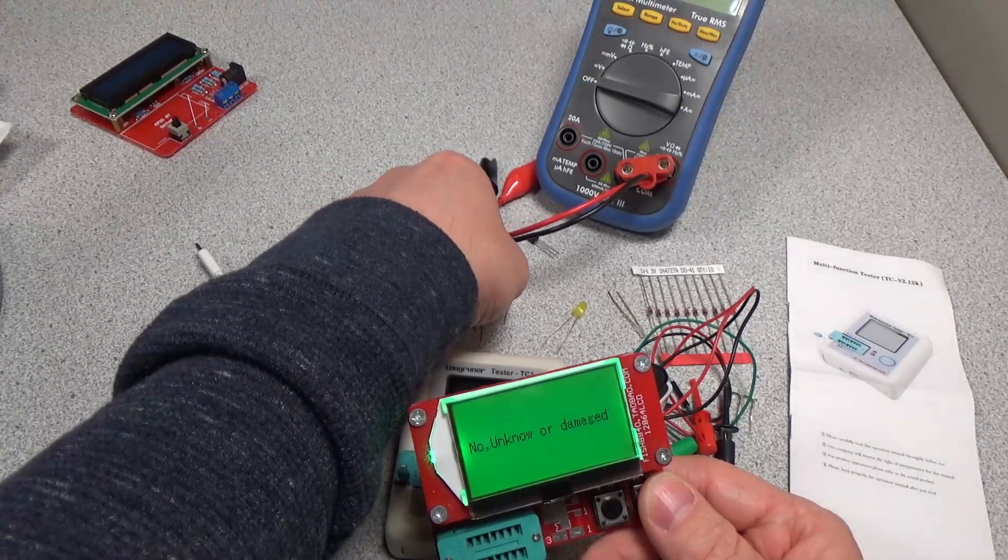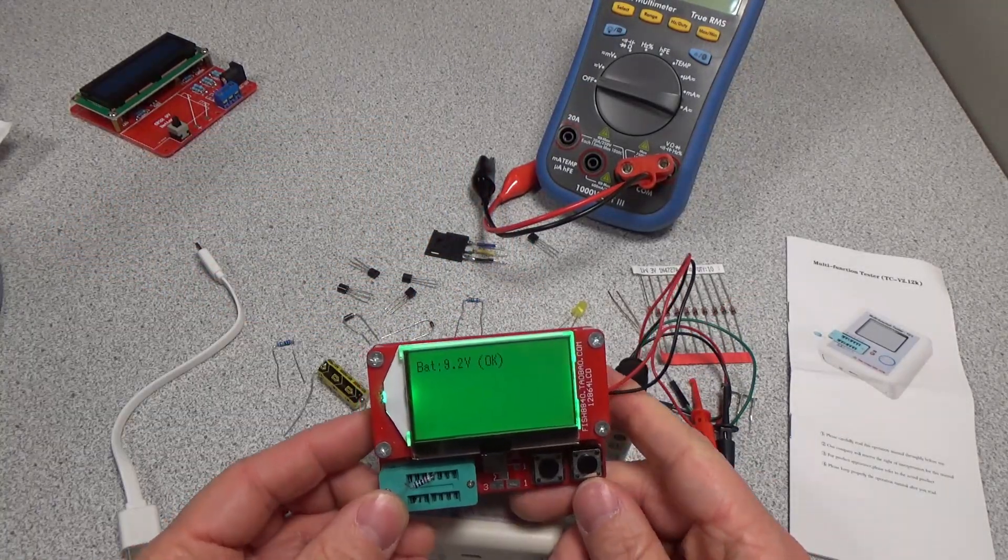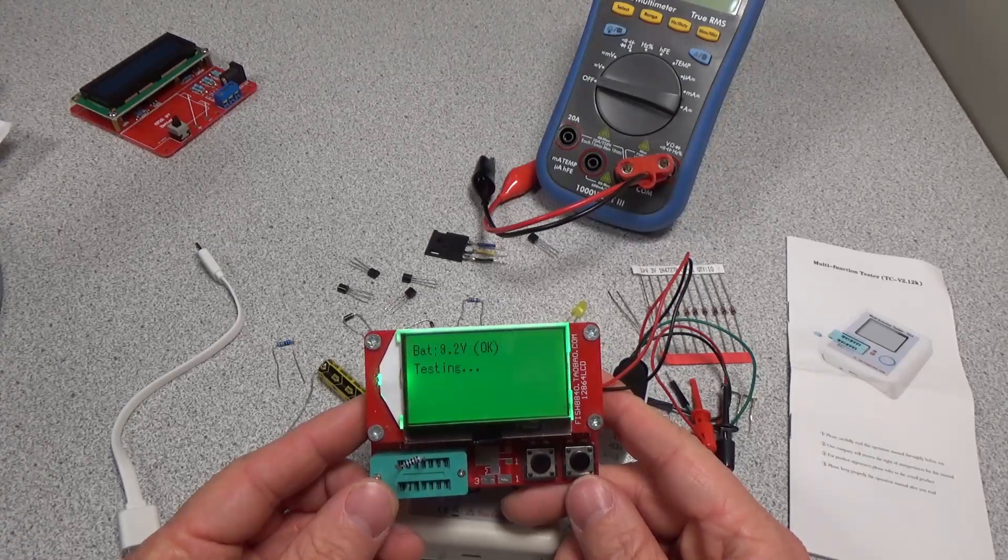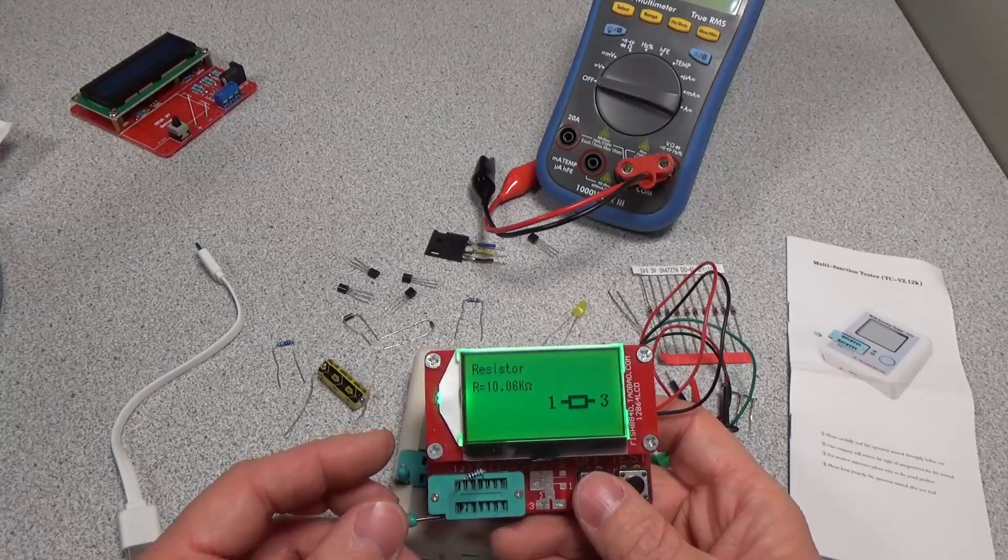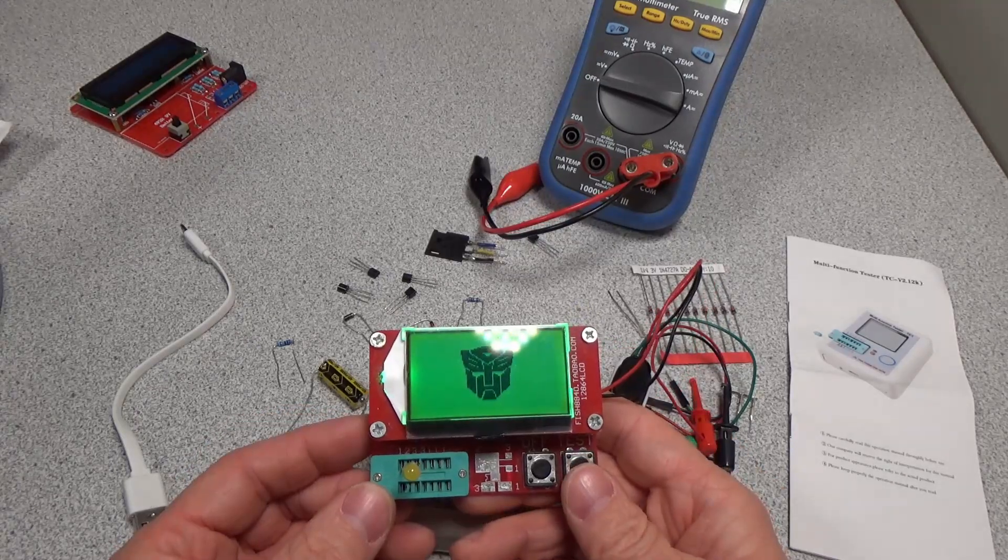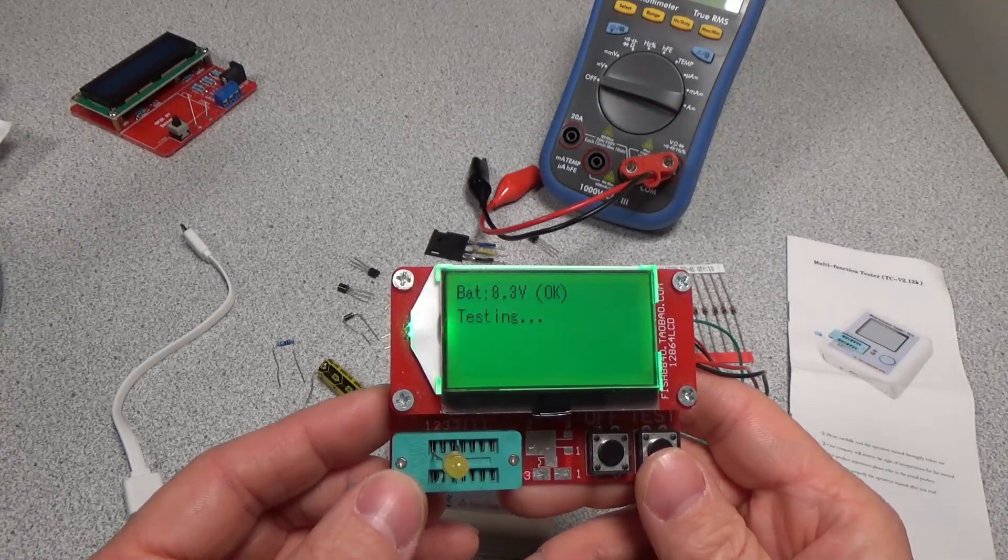Let's go ahead and take a 10k ohm resistor here. Let's try that out. This should read 10k ohms. 10.06k ohms, that's pretty good. Let's try this out. So we should be able to see this LED flash as it goes through its testing process.